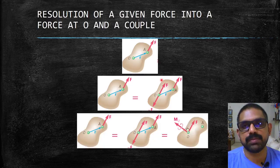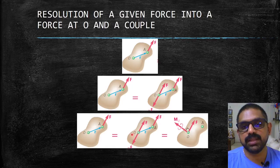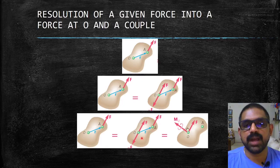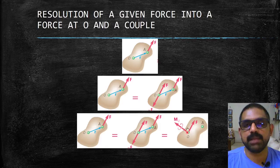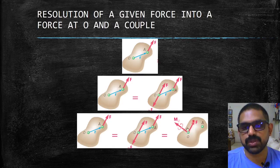Now what happens is that this minus F and this plus F will get added up as a couple. Because as you have seen in the previous slides, r cross F will be the moment, and that moment gets applied at point O. So this moment is r cross F and you have applied the same force.